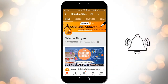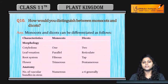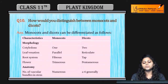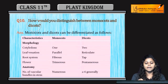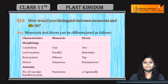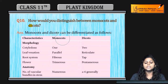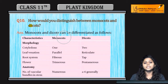The next question is: how would you distinguish between monocots and dicots? What is the difference between monocots and dicots? As the name suggests, mono means one and di means two, and 'cots' refers to cotyledons.